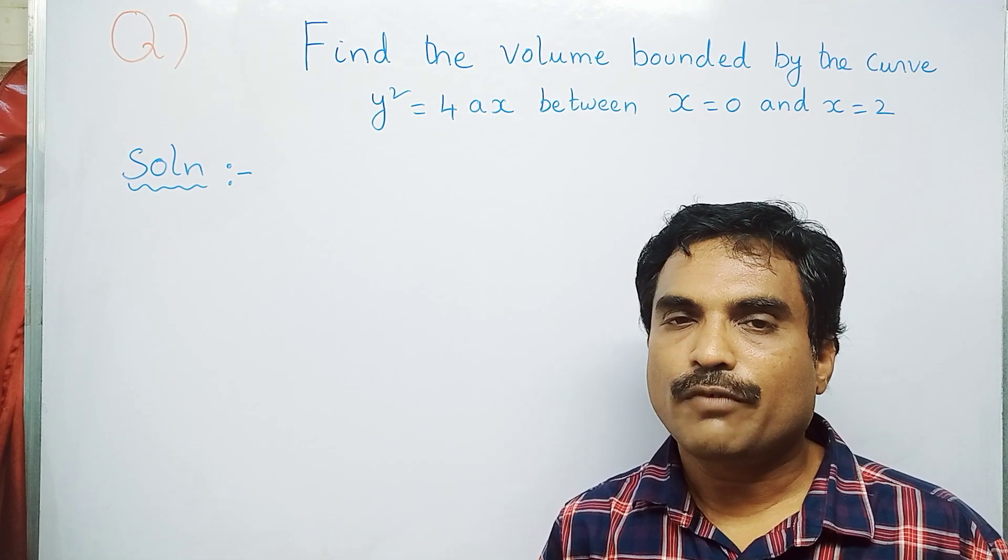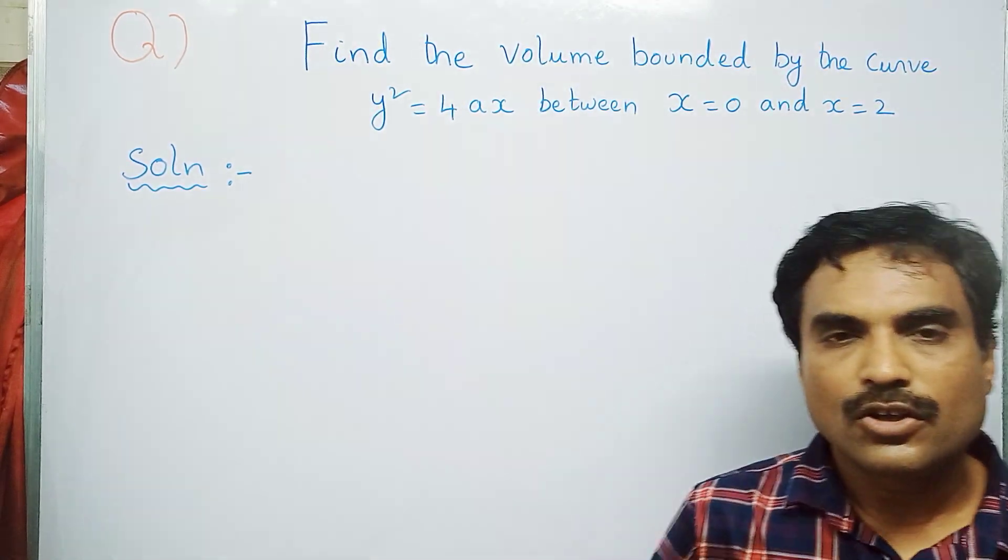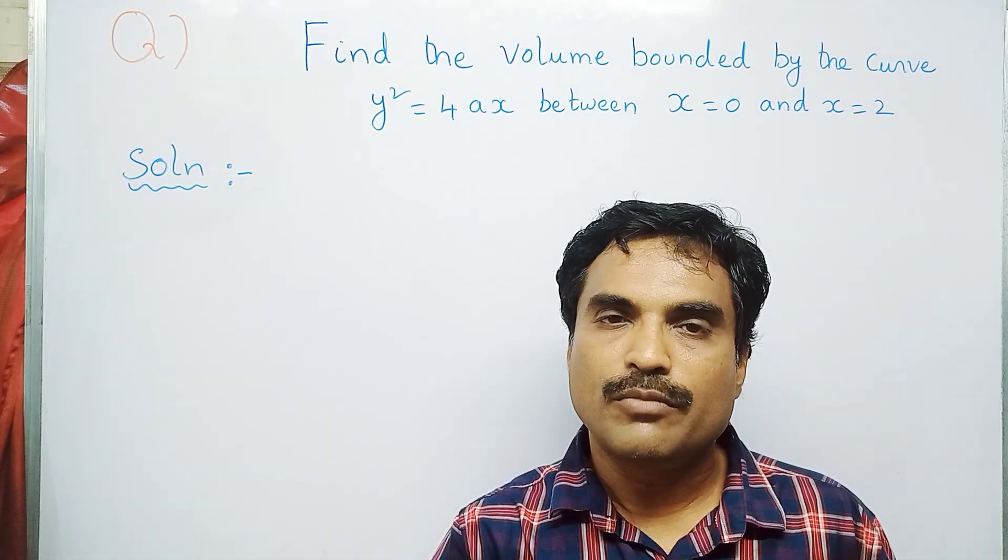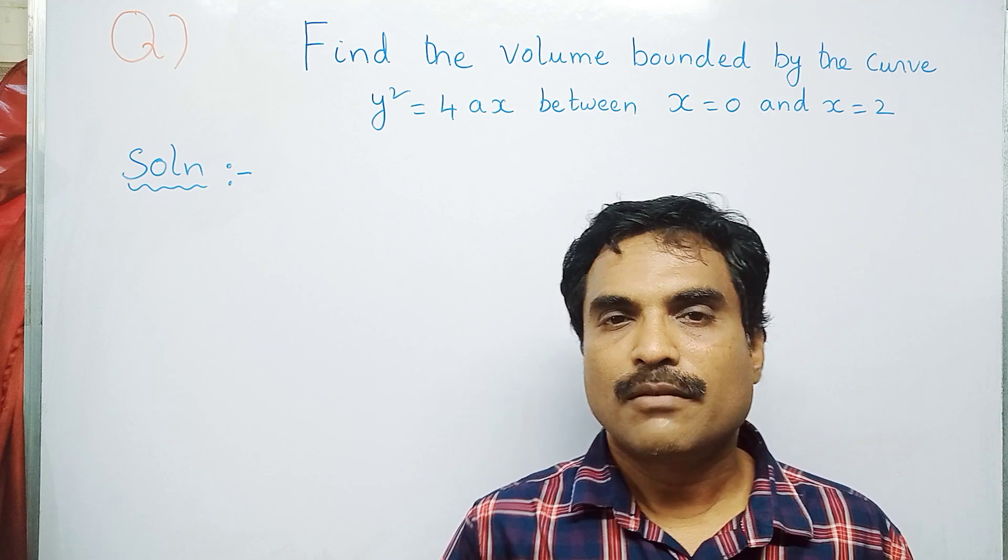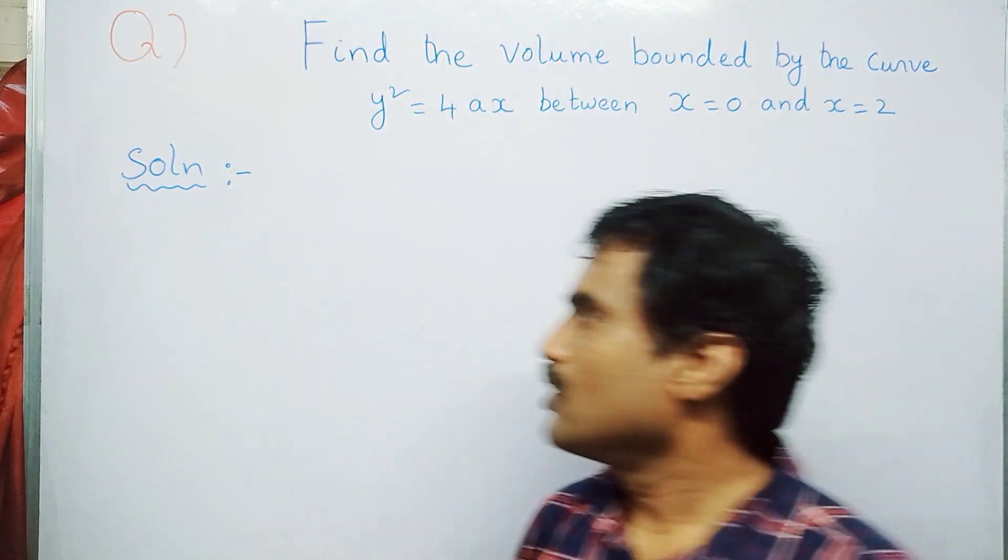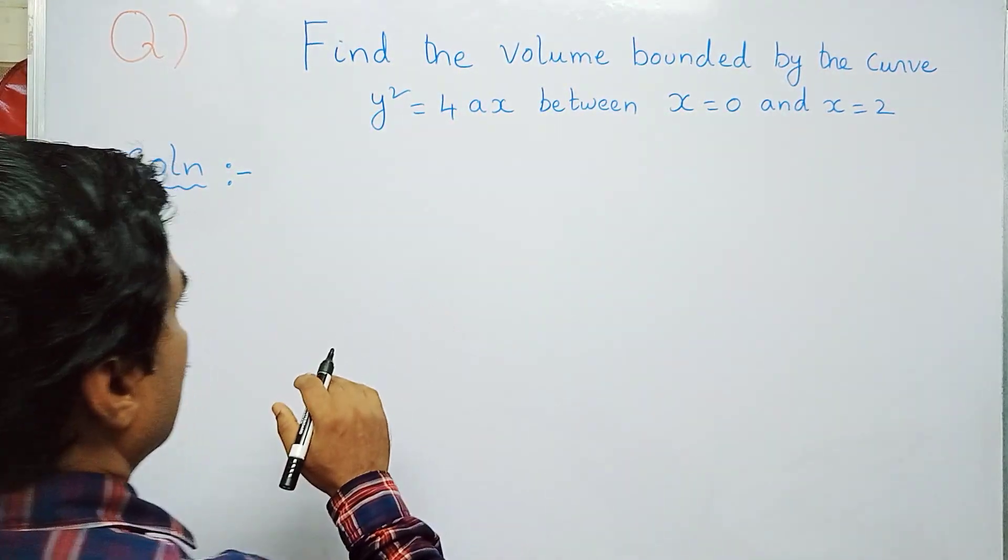For this, you need to use the volume formula, that is volume = π ∫[a to b] y² dx. By using this formula we can find the solution. So first, write what is given here in this problem.